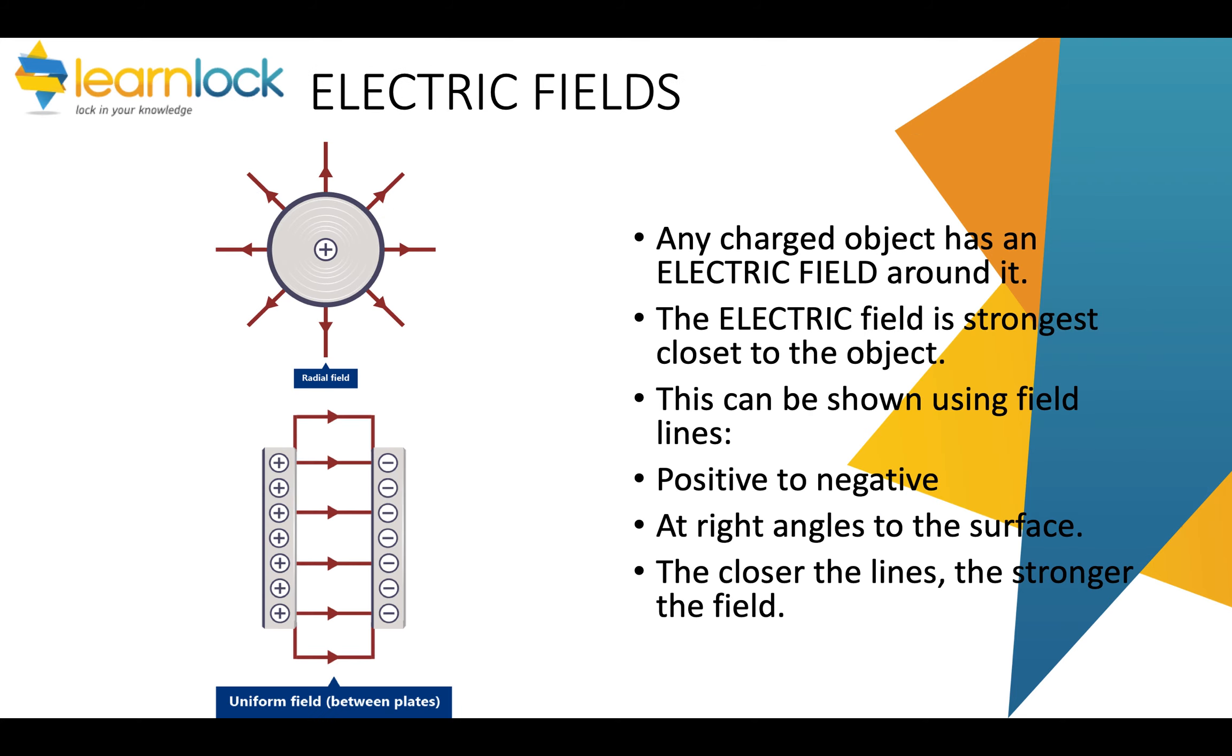Any charged object has an electric field around it, and the electric field is strongest when it's closest to the object, and you can show the electric field using field lines. Field lines always go from positive to negative, they're at right angles to the surface, and the closer the lines, the stronger the field.